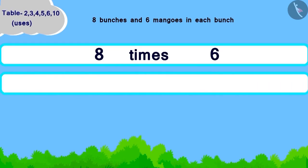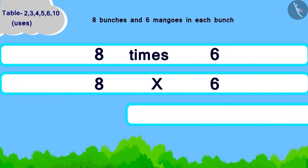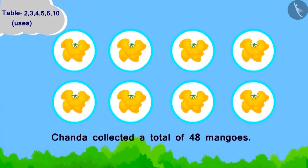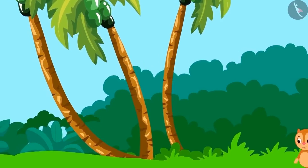Now, how will we write it as multiplication? Eight multiplied by six. Now, using the table of six, they become forty-eight. Chanda collected a total of forty-eight mangoes.